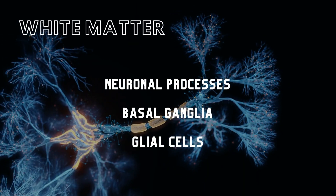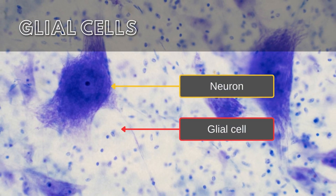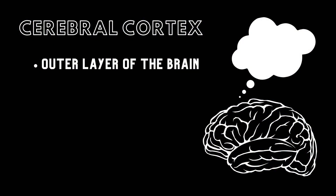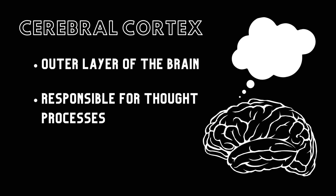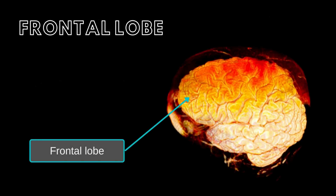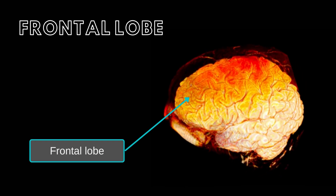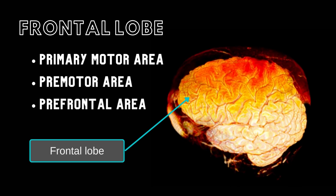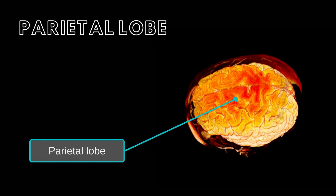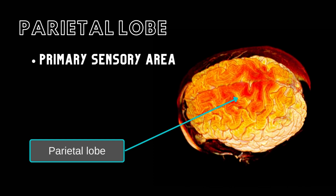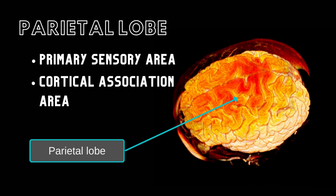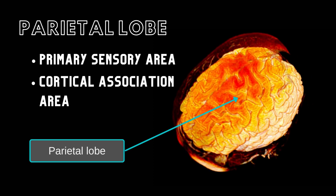Glial cells help maintain the intercellular environment of the nervous system and provide a supporting network. The cerebral cortex is responsible for a brain's thought processes. The frontal lobe, which is the largest lobe of the brain, contains the primary motor area, the premotor area, and prefrontal areas. The parietal lobe houses the primary sensory area and the cortical association area of the brain, which perceives and interprets sensory information.